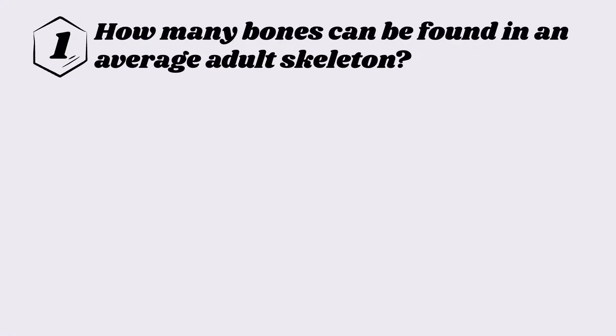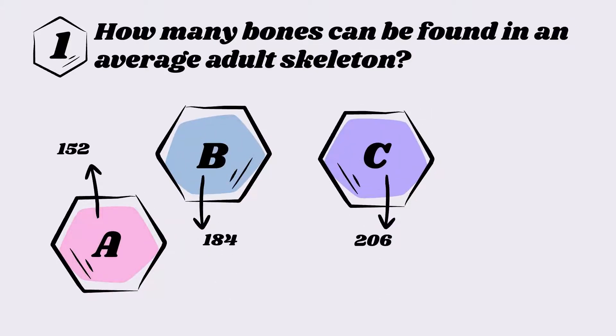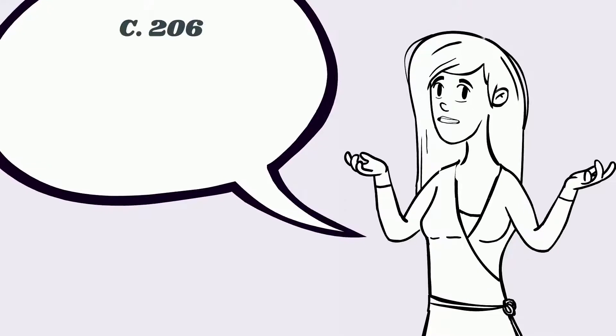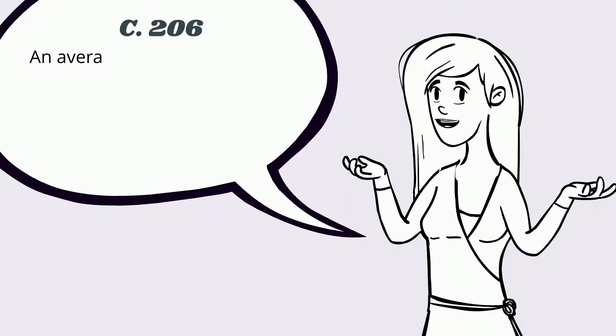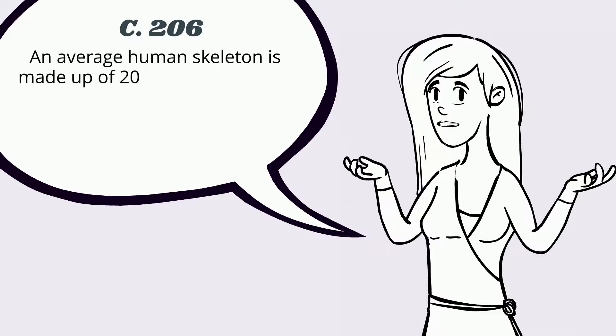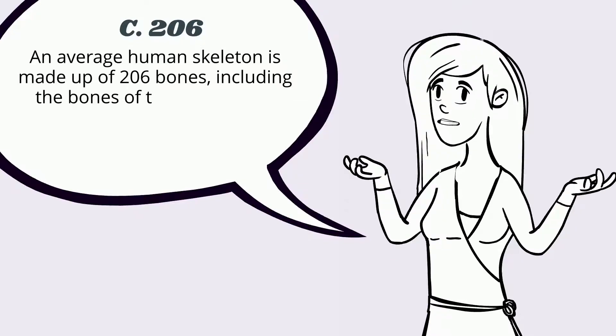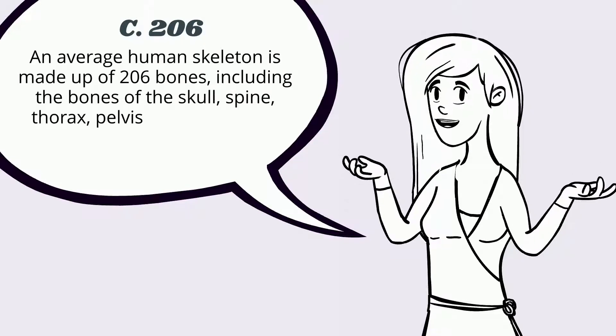Question one: How many bones can be found in an average adult skeleton? A) 152, B) 184, C) 206, D) 248. The answer is C, 206. An average human skeleton is made up of 206 bones, including the bones of the skull, spine, thorax, pelvis, arms, and legs.